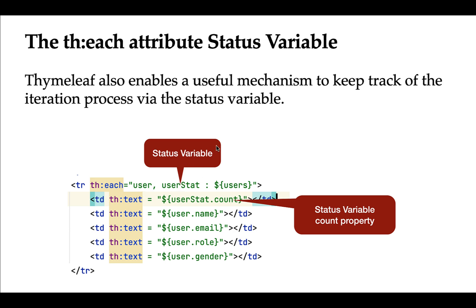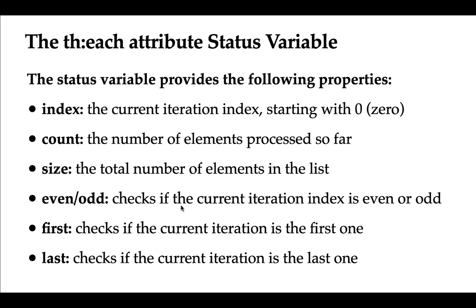We can use the status variable of th:each to keep track of each iteration. The status variable provides the following properties: index, count, size, even, odd, first, and last. The 'index' property gives the current iteration index starting with zero. 'Count' counts the number of elements processed so far. 'Size' gives the total number of elements in the list. 'Even' or 'odd' checks if the current index is even or odd. 'First' checks if the current iteration is the first one, and 'last' checks if it is the last.